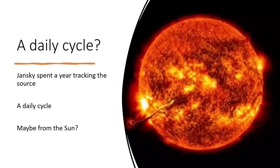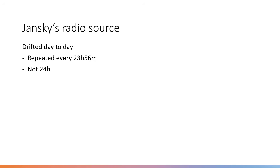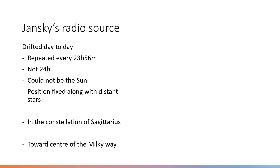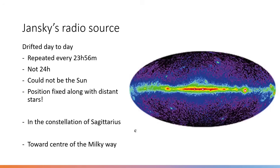It allowed him to track thunderstorms, but he found a strange hiss coming into the antenna and couldn't identify where it was from. After a year of study, he noticed it seemed to be cycling on a daily basis, which suggested it was coming from the sun. In fact it drifted from day to day, and the repeat period was not 24 hours but 23 hours and 56 minutes — so it could not be the sun. It was actually fixed to the apparent sky rotation of the distant stars, coming from the constellation of Sagittarius, towards the center of the Milky Way.